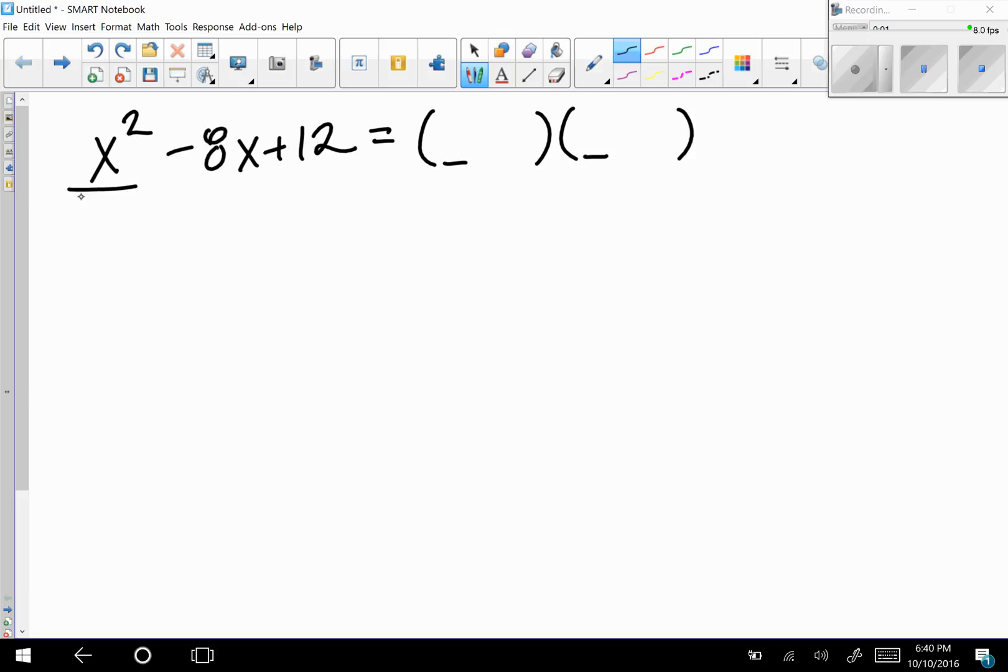This first example is the easiest case when a equals one - when the coefficient of x² is one. So this must be one x times one x, which is easy.